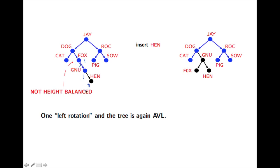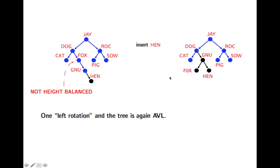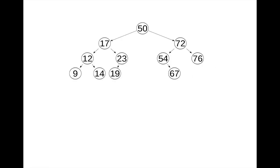The difference right here is two — left minus right is actually minus two — and so this is not a good situation; we don't allow that. So what we're going to do is rotate on this edge. We do a rotate left, and that gives us a new configuration where the tree is height-balanced. We basically made 'hen' go one step higher up the tree, so the path to it is not so long. In general, we need one or two rotations to get an unbalanced tree back into balance after one insertion.